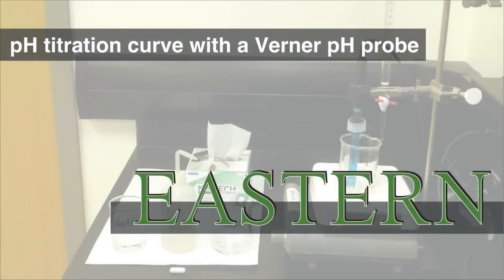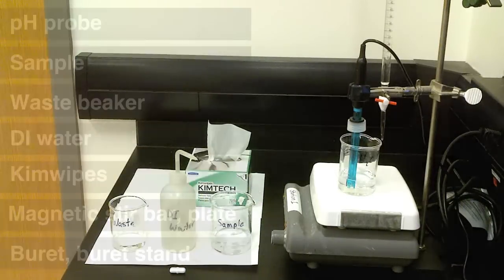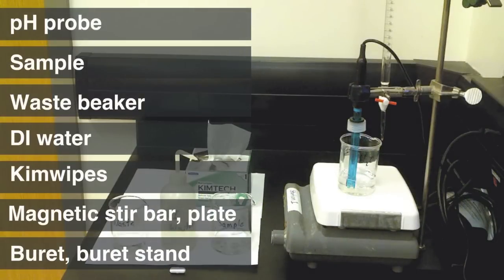Okay, now we're going to use the Vernier pH probe to create a titration curve. You're gonna need a few things so let's get it together, alright?